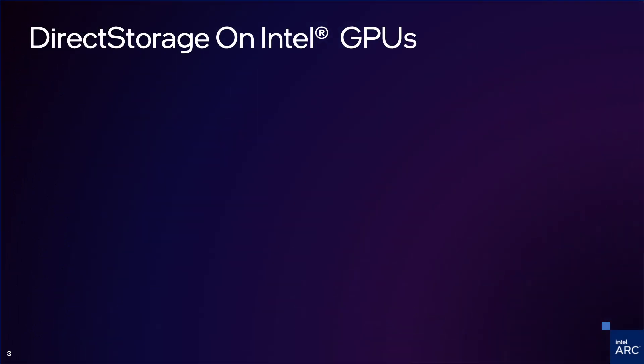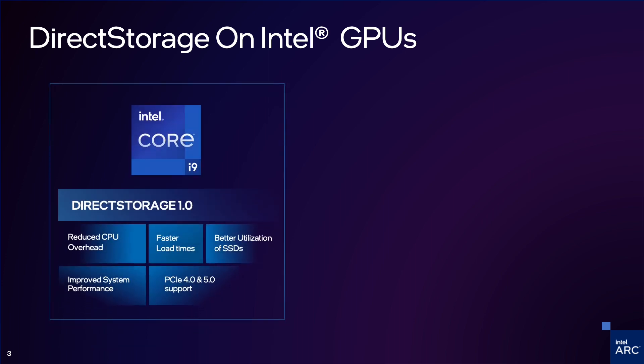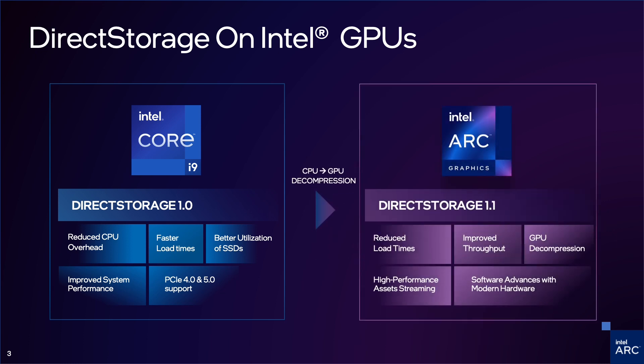Direct Storage 1.0, released in 2021, made file access as easy as drawing triangles. Over the last couple of years, Intel has collaborated with Microsoft to co-engineer and optimize Direct Storage, a new game assets technology used for transporting and compressing game assets. This collaborative effort allows Direct Storage 1.1, released in November 2022, to discover and invoke highly optimized GPU decompression for Intel GPUs, including the latest Intel Arc GPU family. There are several optimizations with this version of Direct Storage.